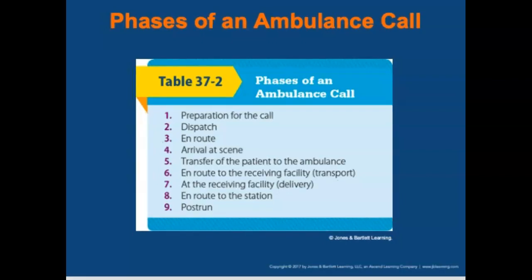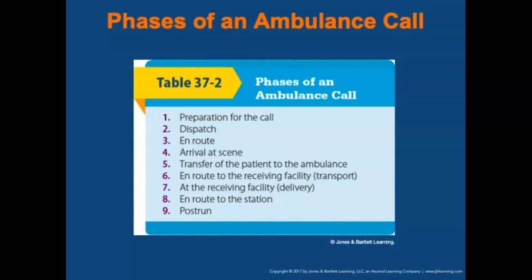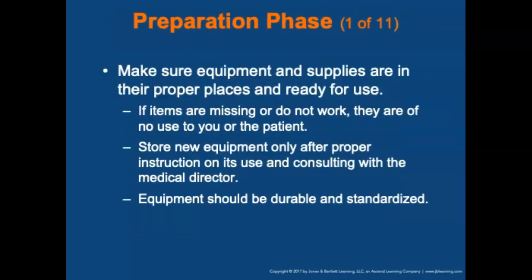An ambulance call has nine separate phases: the preparation for the call, dispatch, en route, arrival to the scene, transfer of the patient to the ambulance, en route to the receiving facility which is essentially transport, at the receiving facility which is delivery of the patient, en route back to the station, and finally post-run.